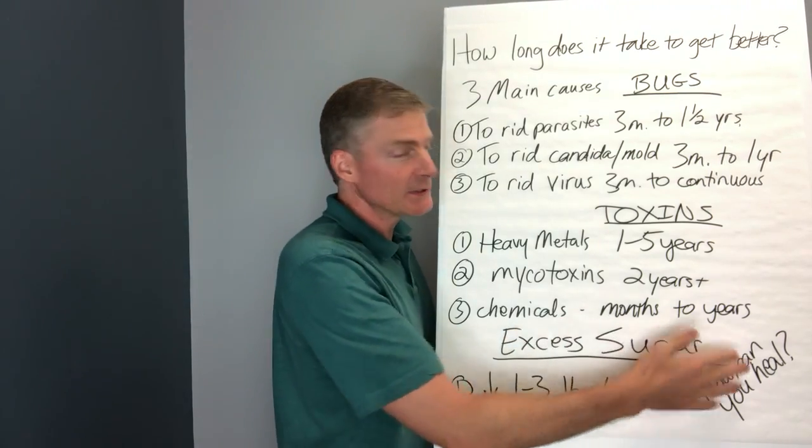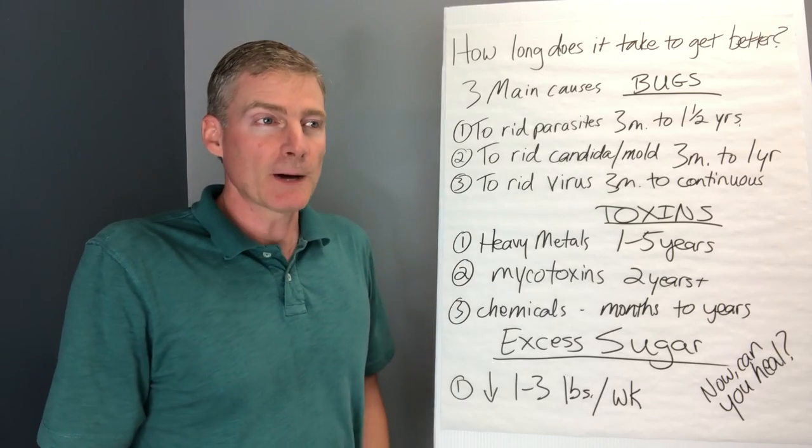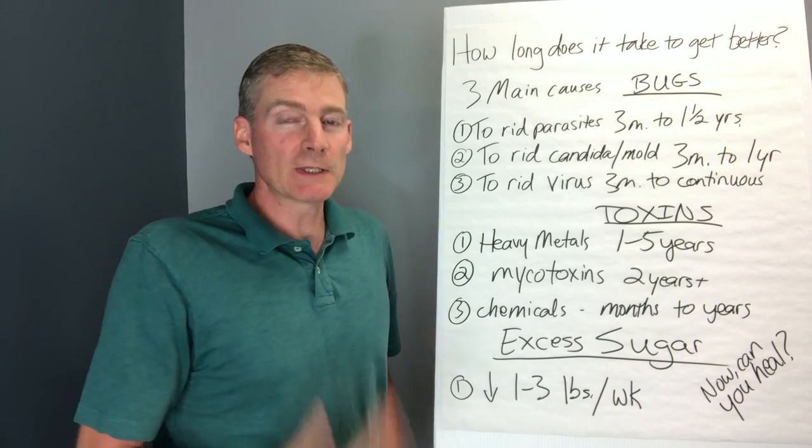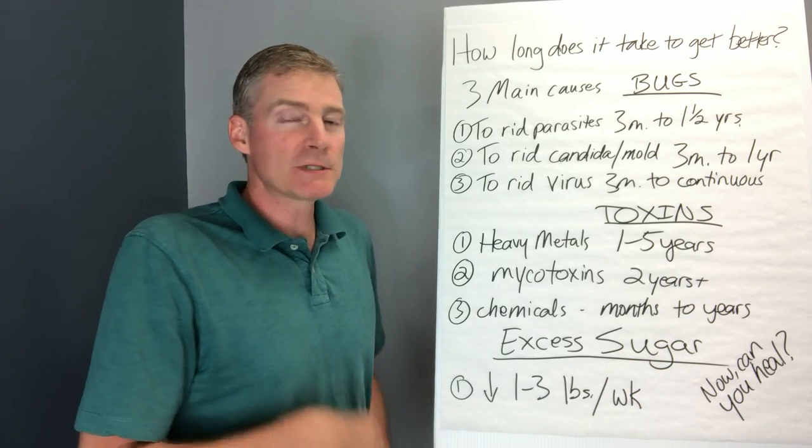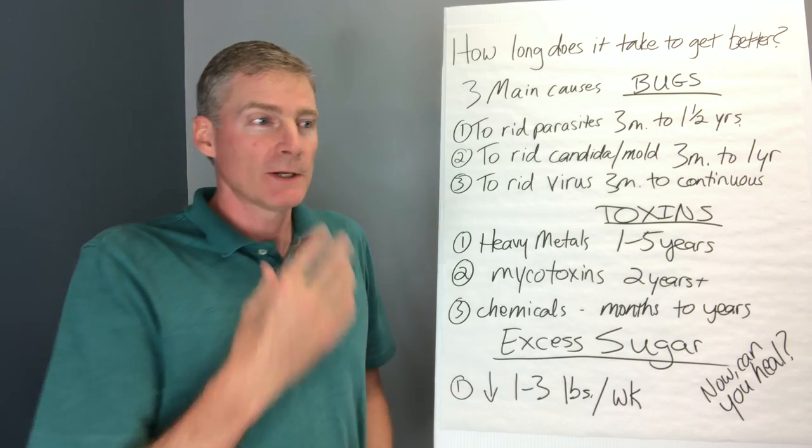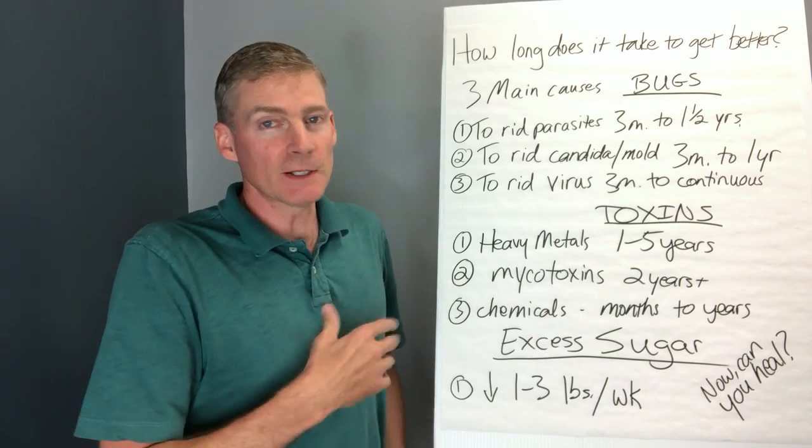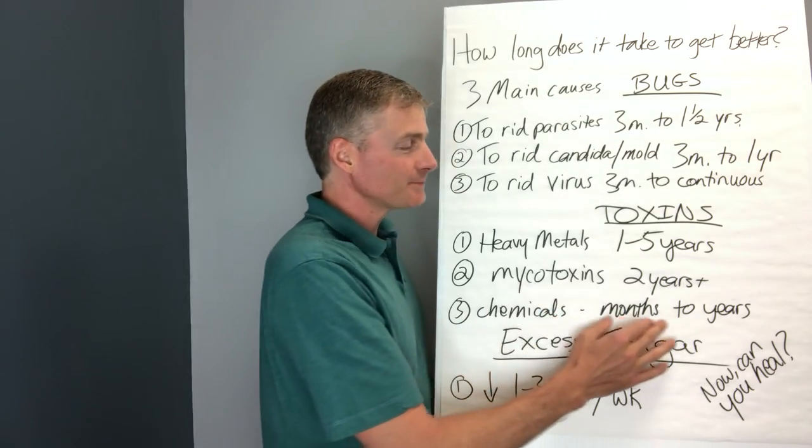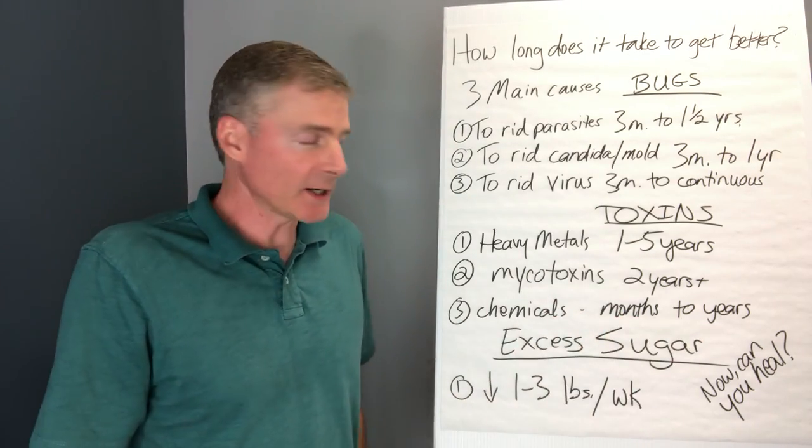And then chemicals. It could be months to years to get rid of how many thousands, tens of thousands of chemicals that are on the market. We're breathing them in. We're drinking and eating these chemicals. We sit in a car, we're breathing in chemicals. There's chemicals in the dust in every single building on the planet. So how long does it take to get rid of that? That's kind of hard to tell.